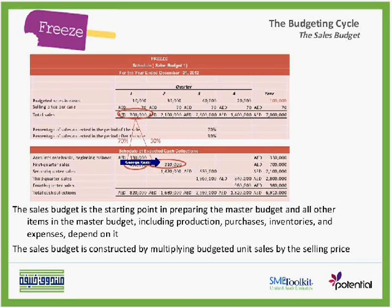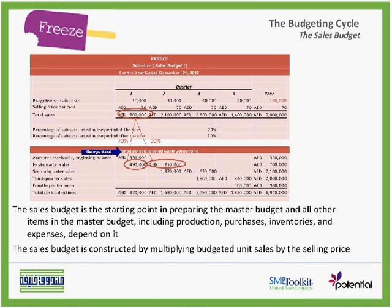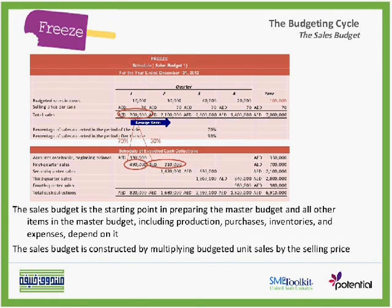Starting in the first quarter, we had already accounts receivable. This accounts receivable of $330,000 is nothing but 30% of the previous quarter's sales. So always we collect 70%, and 30% will be postponed to the second quarter. For the second quarter, we have $2,100,000 in budgeted sales. So the company is expecting to collect 70% of that figure, which is $1,470,000, and the remaining 30% will go to the third quarter.